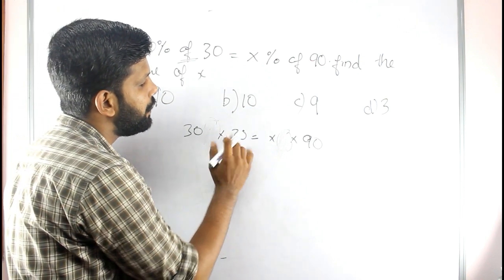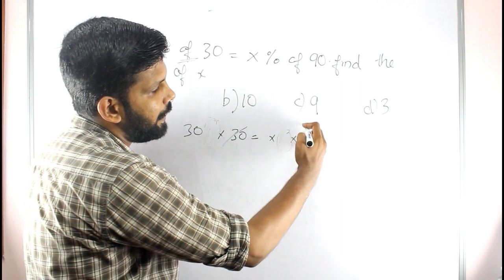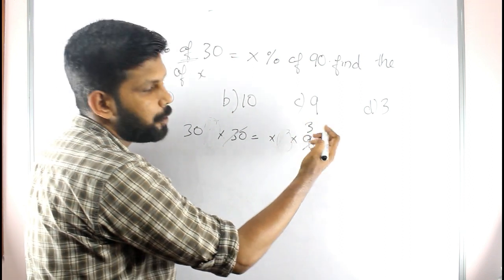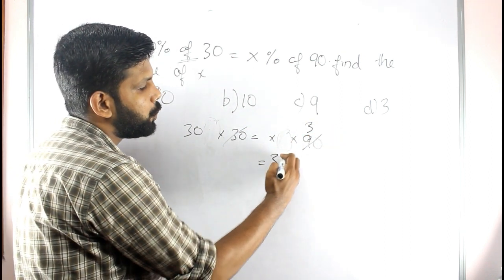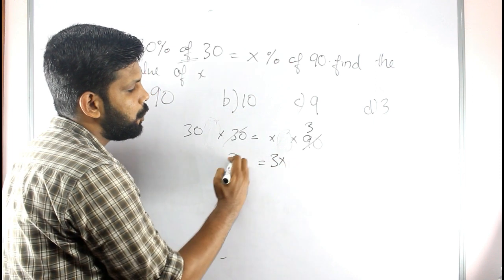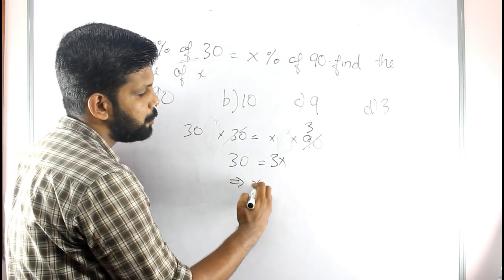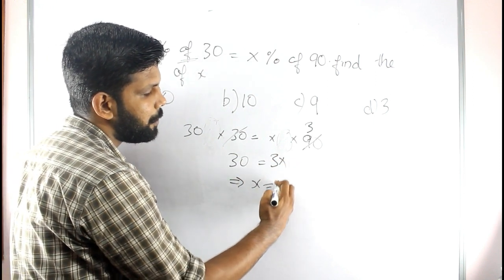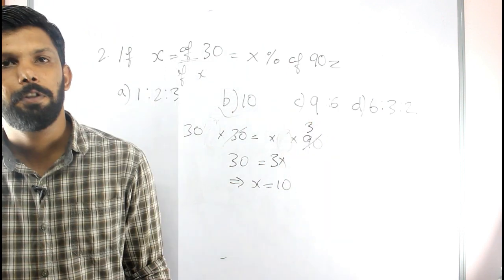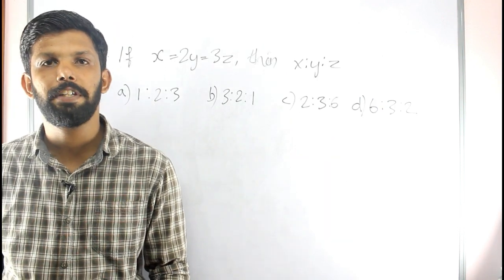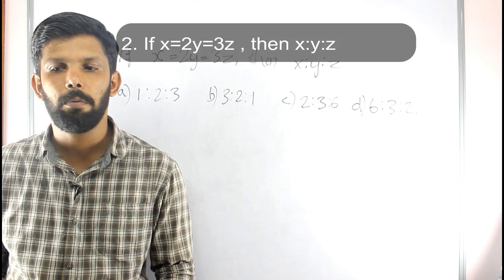We are going to cross out 30 and 90, simplifying to 3x equal to 30, which implies x is equal to 10 is our right answer. Option B is our right answer.